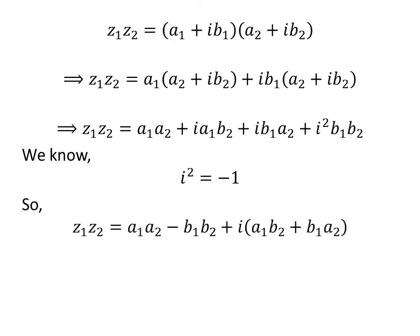Since i squared equals negative one, z1 times z2 is equal to (a1 times a2 minus b1 times b2) plus i times (a1 times b2 plus b1 times a2).